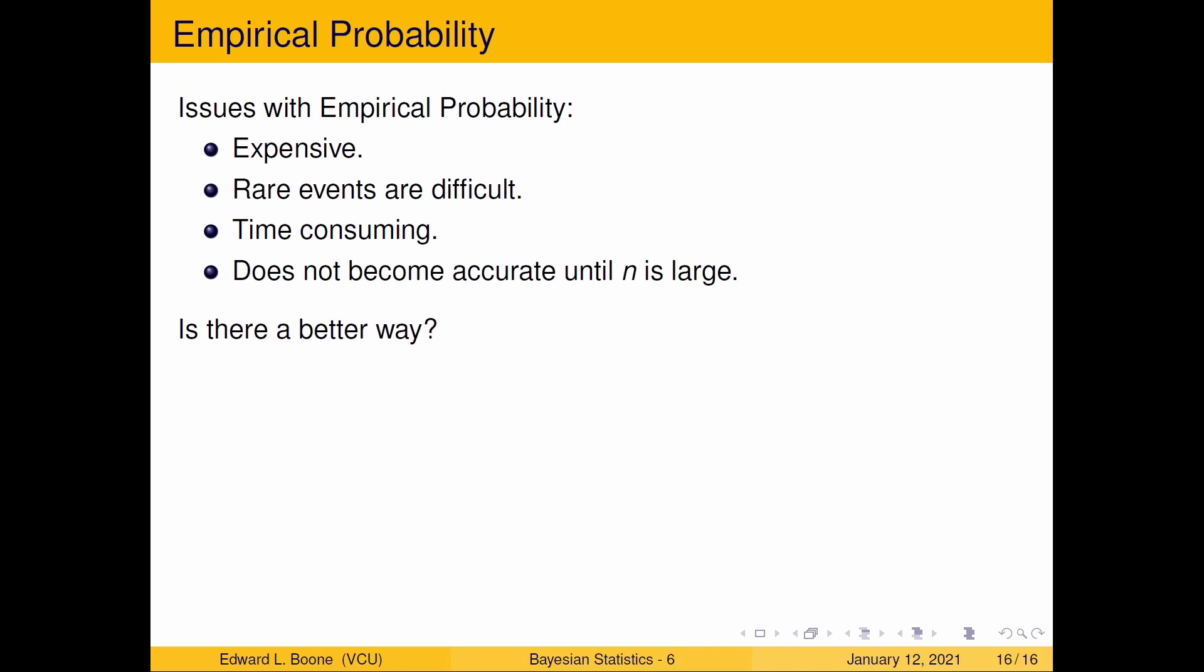There are some issues with empirical probability. Number one, it's expensive. You actually have to do the experiment, and that can cause problems if it's incredibly expensive to do. Rare events are difficult. Think about it. I have to look at an earthquake. Well, I have to wait for one to happen. So if I'm going to be looking at them and especially the time between them, if I don't have historical data, I am going to have to wait for that to happen. And that can be extremely time consuming. And also these don't become accurate until n is large, which means we couldn't just do a few expensive experiments. We're going to have to do a lot of them in order to find this out.